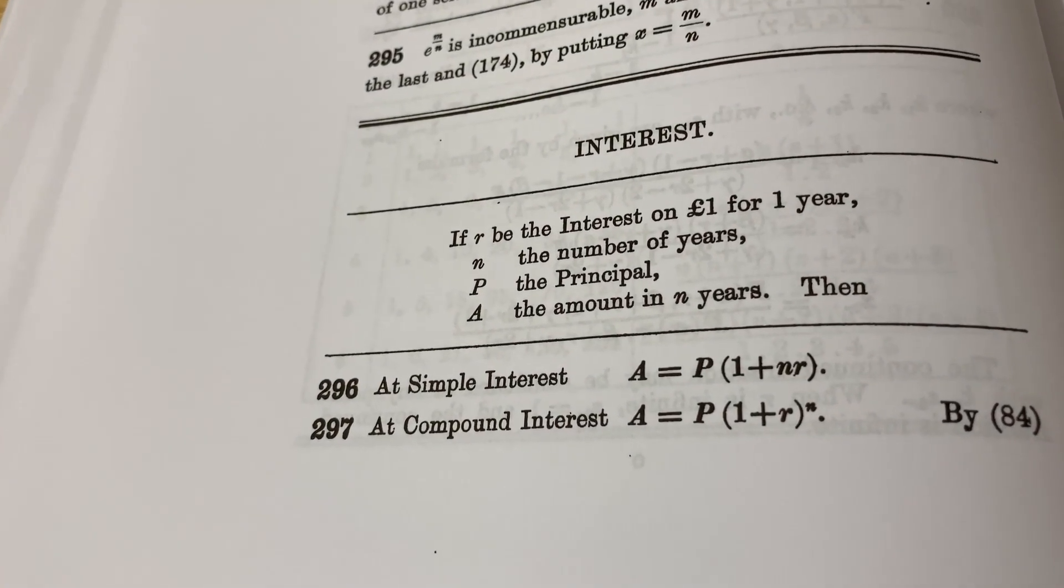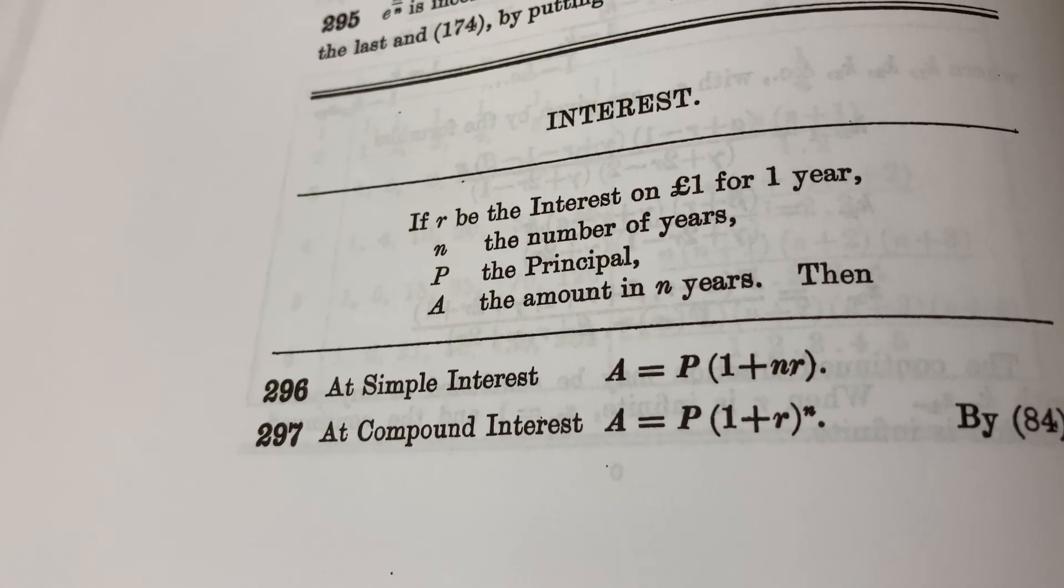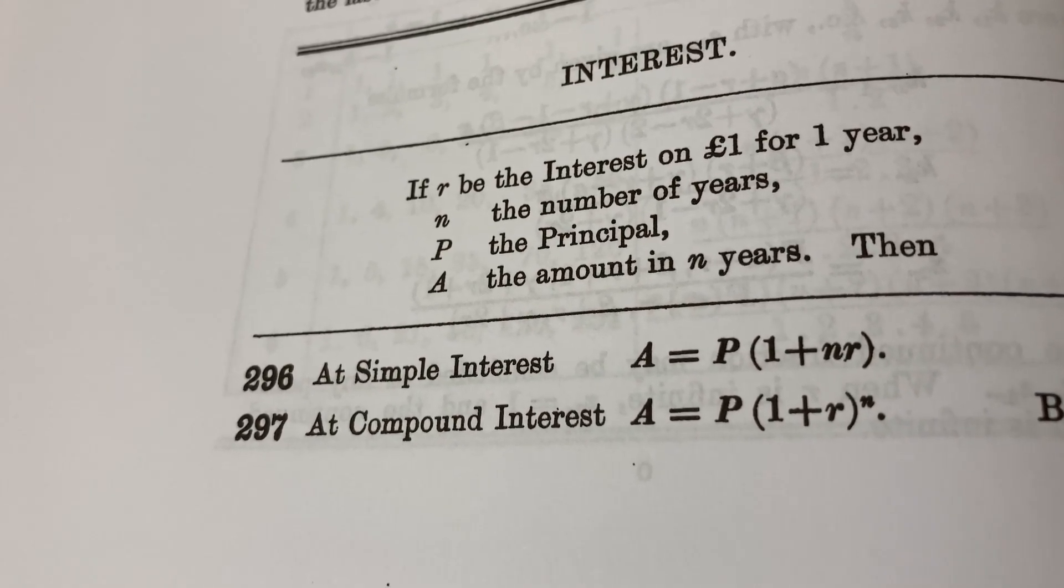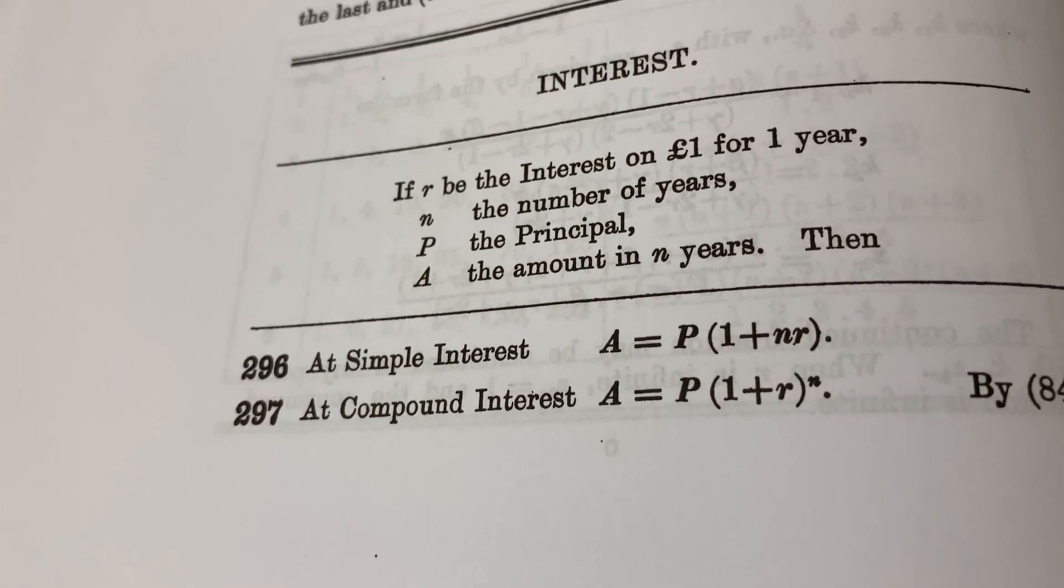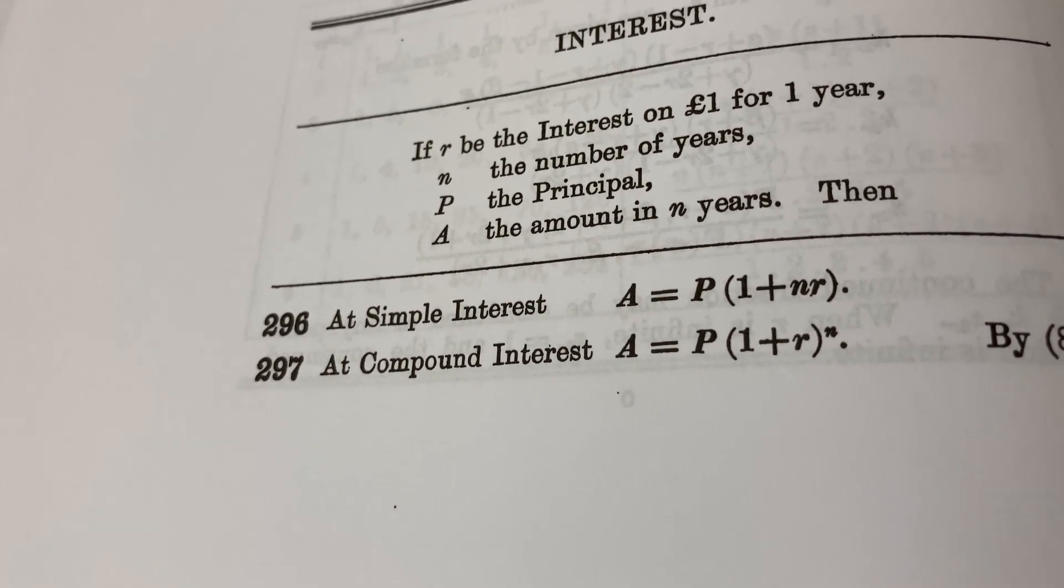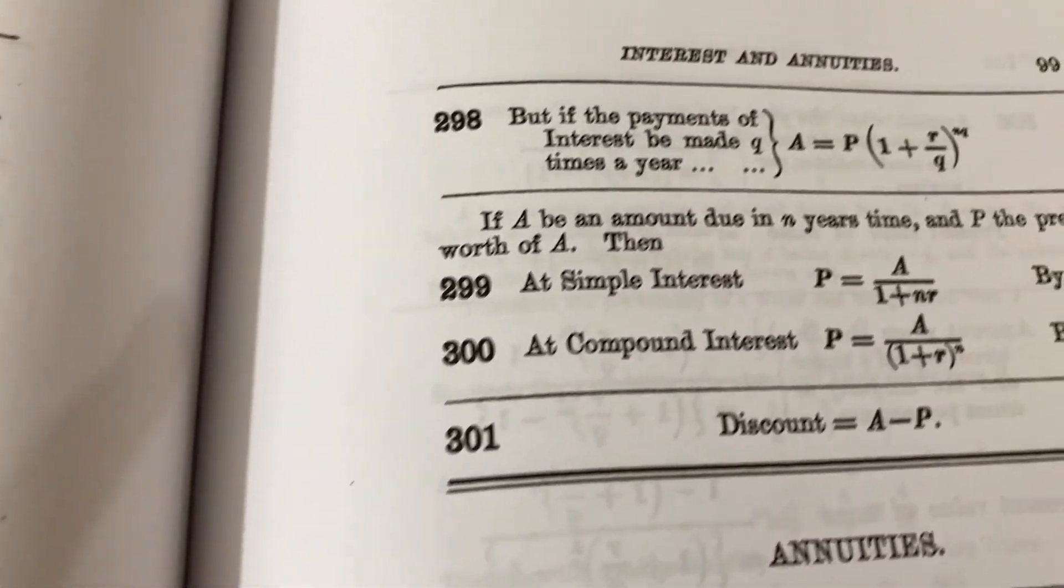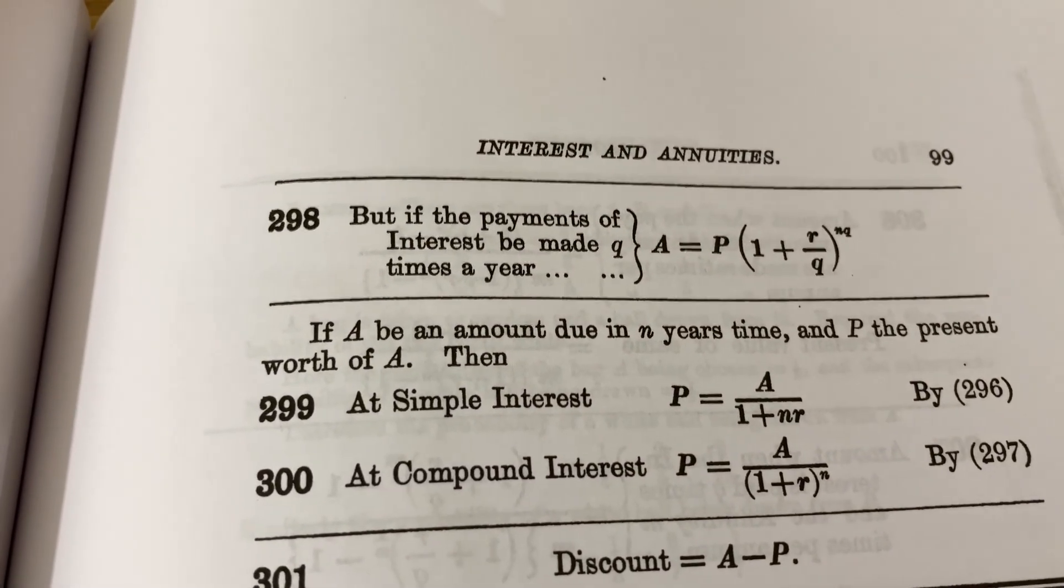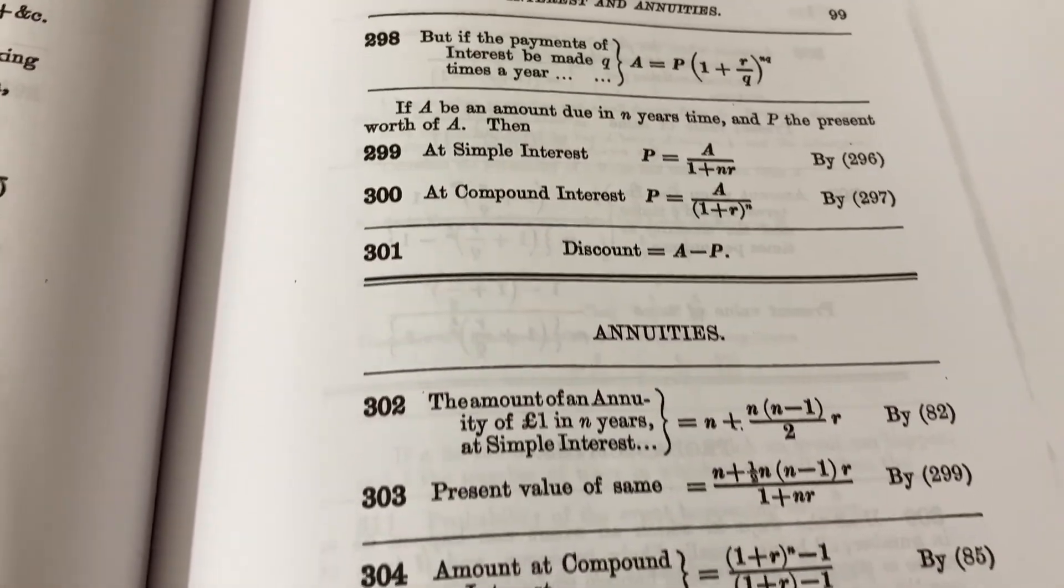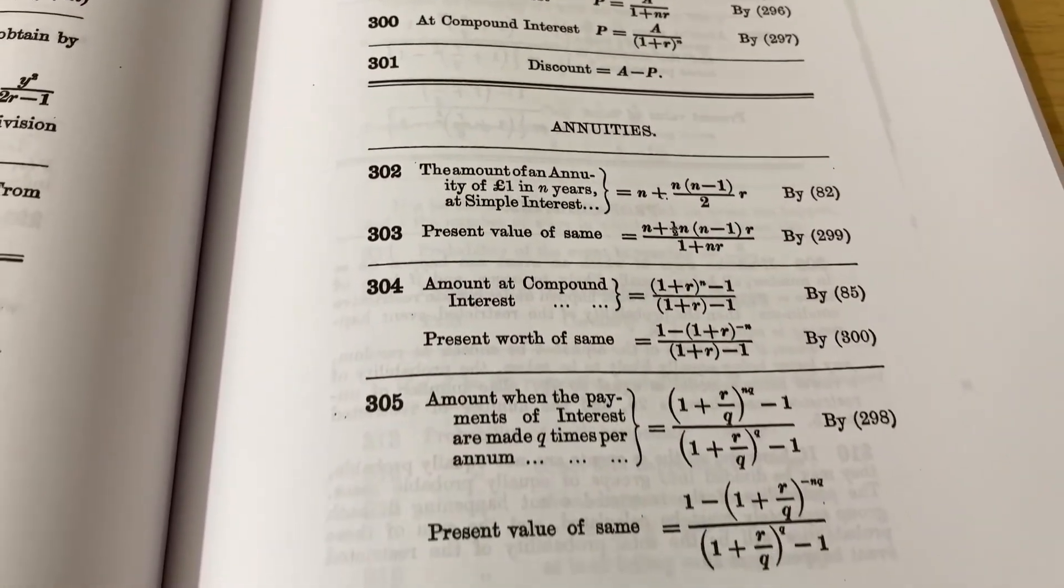So here's something I didn't expect to find in the book. It actually talks about interest. So you have R be the interest for one year, N the number of years, P the principal, and A the amount in N years. And then they give you these formulas. And so these are formulas that you study in an algebra class in college today. So this book actually does have a lot of basic math. And I was really shocked to find so much on interest and annuities in this textbook. It's pretty cool.